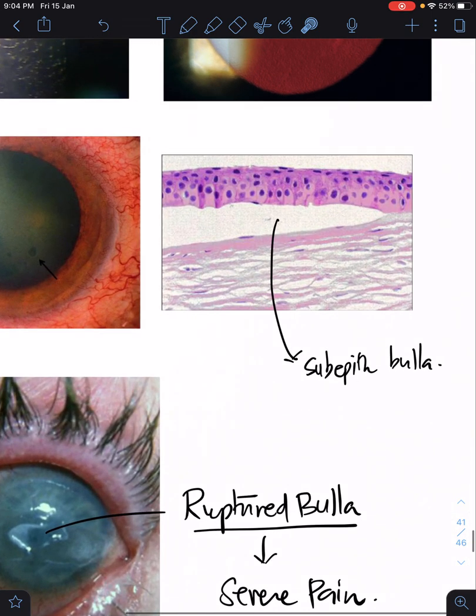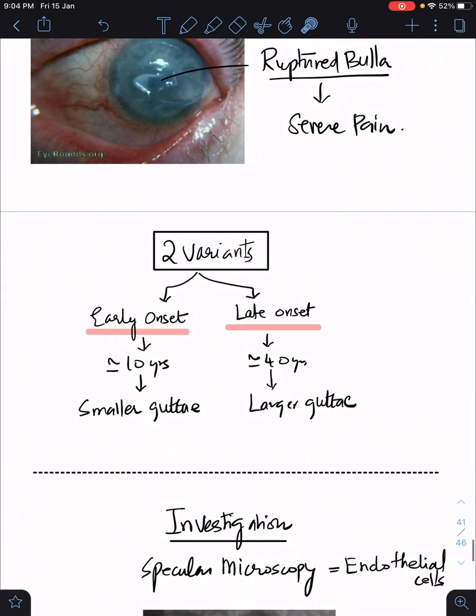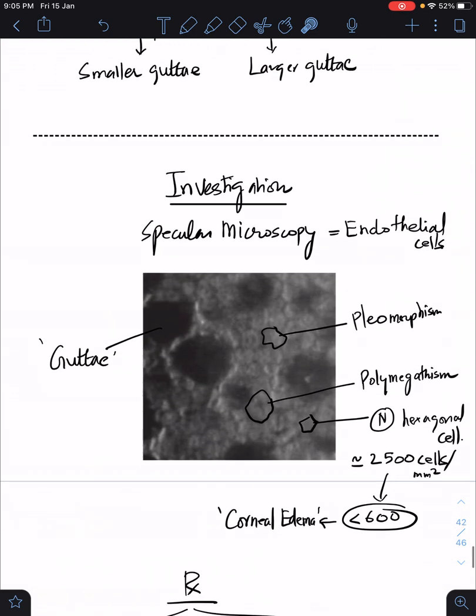This histopathological picture shows the subepithelial bulla - the epithelium is separated from the underlying Bowman's membrane. There are basically two variants: the early onset and late onset. Early onset at 10 years with smaller guttae, late onset at 40 years with larger guttae.